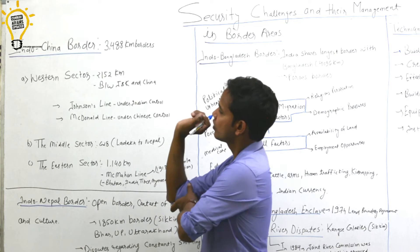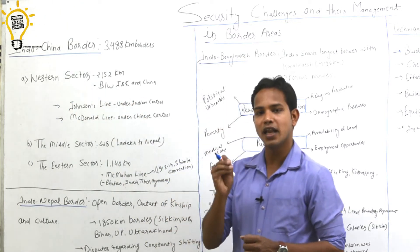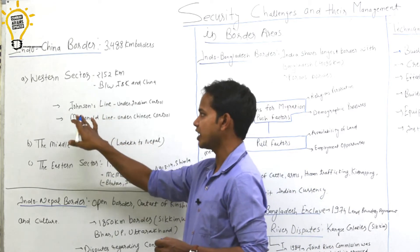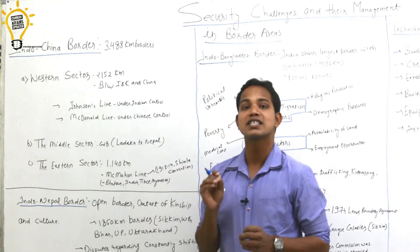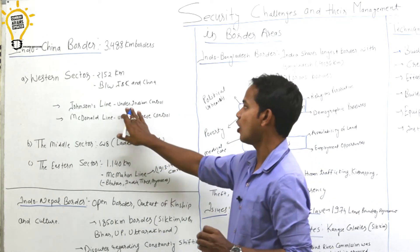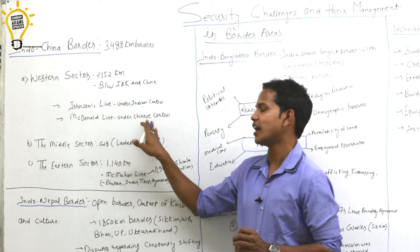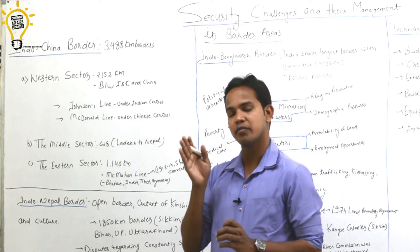When Britishers were demarcating, two different people had different border lines. One was Johnson's and one was McDonald's. Both had different opinions. Johnson said that the Aksai Chin part is exclusively in India's control, whereas McDonald said it is under Chinese control. Currently, it is under China's control.